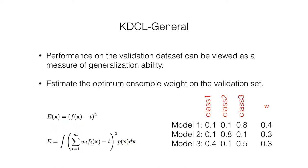KDCL-MinLogit generates the soft target by selecting the minimum element of each category. The teacher with more generalization ability usually instructs students to converge better. Performance on the validation dataset can be viewed as a measure of generalization ability. Therefore, KDCL-General is proposed to calculate an optimal ensemble of the component networks to approximate the teacher. The optimum ensemble weight can be solved by the Lagrange multiplier. Measuring the generalization error incurs little computational cost, and updating network parameters a few steps does not change the output drastically due to the small learning rate. Hence, we update the optimal weight vector each training epoch.